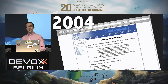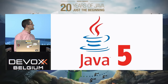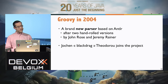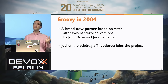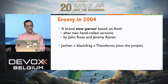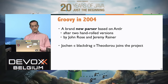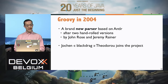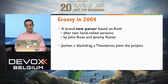In 2004, that's when Facebook was born — Java 5 was also that year. We added a new parser. There have been a few rewrites of the Groovy parser over the years; there were actually two hand-rolled parsers before moving to an ANTLR-based parser. The changes were contributed by John Rose and Jeremy Rayner. John Rose is the guy who worked on the InvokeDynamic support for the JVM. That's also the year where Jochen Theodorou, best known by his nickname Black Drag, joined the project — the second longest committer after me.